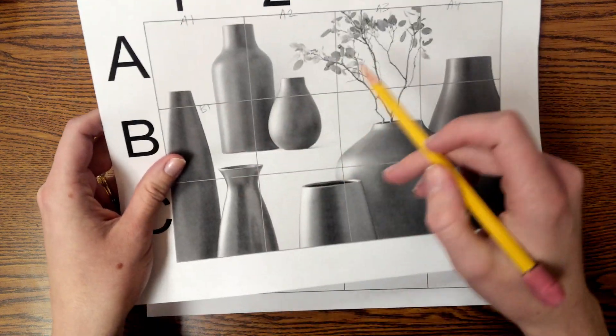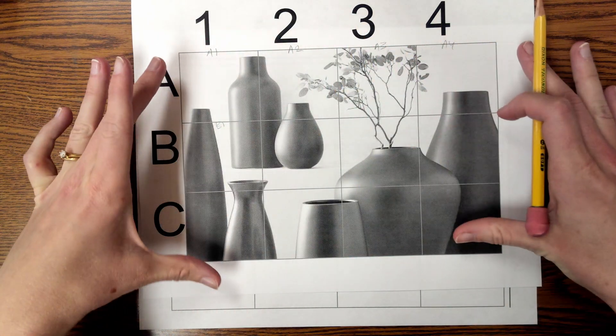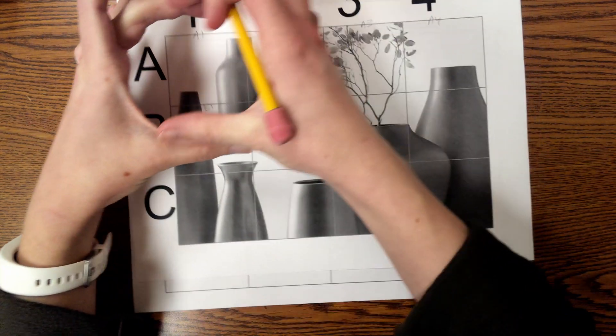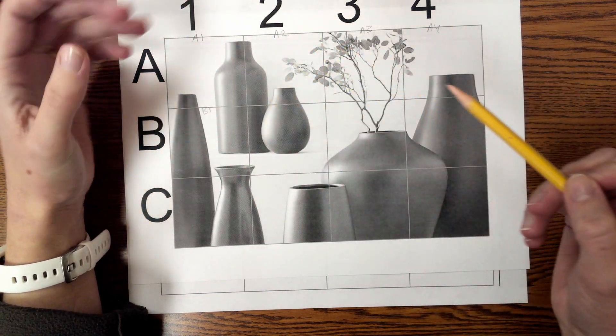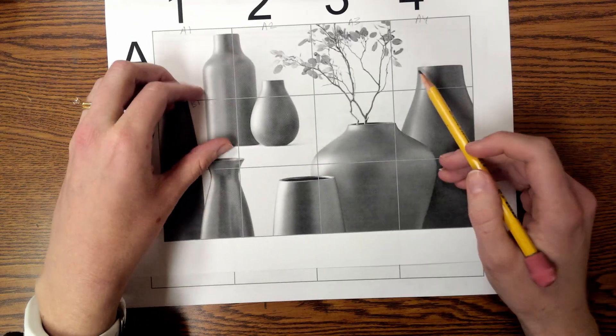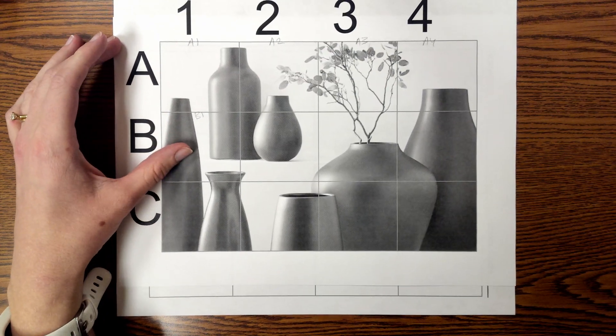The major advantage with grid drawing is it takes a detailed picture and breaks it up into smaller, more manageable chunks, and adds lines that we can use as edges to help us estimate where different parts of the drawing are.